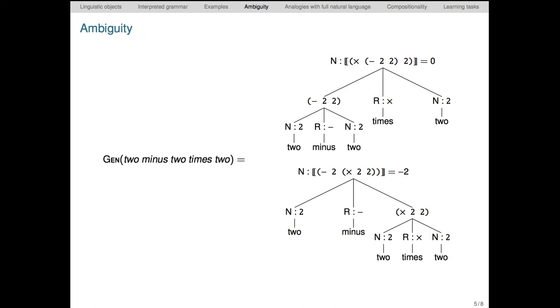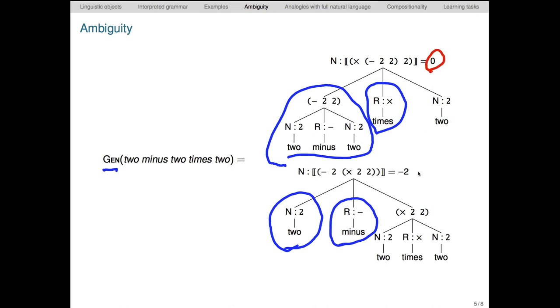You might have perceived an ambiguity in the previous example. This slide illustrates how we handle ambiguity. Here I assume that we have a function called gen that maps utterances to their potential syntactic structures. This is a one-to-many mapping because of ambiguity. There are two ways to parse the string two minus two times two, as the trees indicate. The top tree parses two minus two as a unit, the first argument to the main connective times, whereas the bottom tree parses two as the left argument alone, and the main connective is minus. The ambiguity is meaningful in the sense that the first denotes zero in the end, and the second denotes minus two.